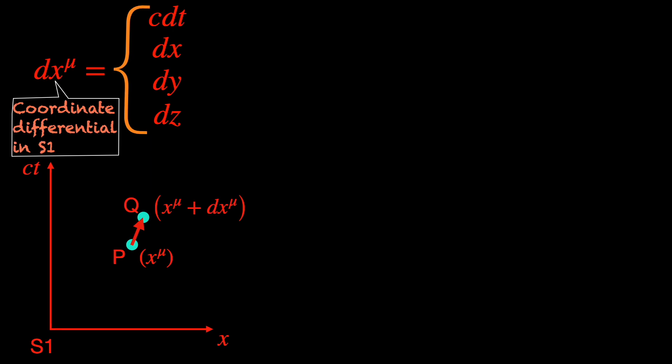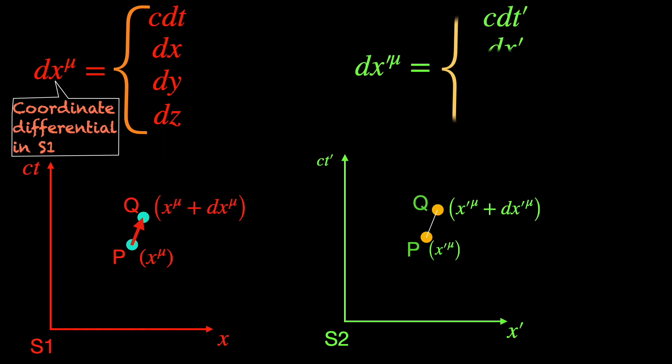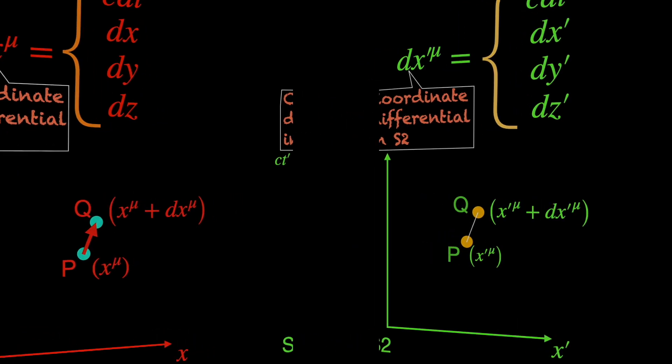Now, in a different inertial frame S2, the same events P and Q will have a different set of space-time coordinates, the primed ones. The corresponding coordinate differential between P and Q will of course be DX' mu measured by observers in S2 frame. Can we calculate DX' mu using our measurements of DX mu? Quite easily.